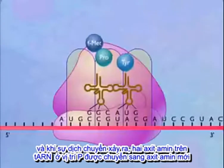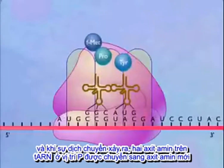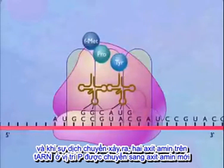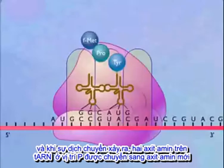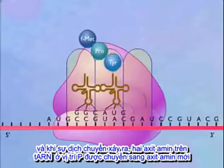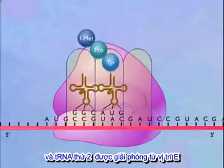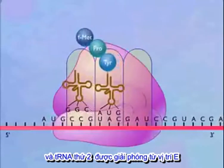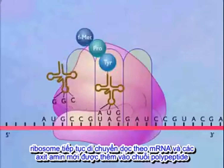As the shift occurs, the two amino acids on the transfer RNA in the P-site are transferred to the new amino acid, and the second transfer RNA is released from the E-site.